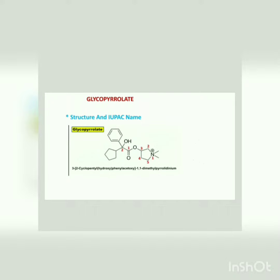On the right side, 1,1-dimethyl pyrrolidium is present, which is basically the ring of pyrol. After removing its double bond it gets converted into pyrrol, and there is a positively charged nitrogen, so it is called pyrrolidium. This is how we can remember the structure of glycopyrrolate by its name and by its IUPAC name. Thank you.